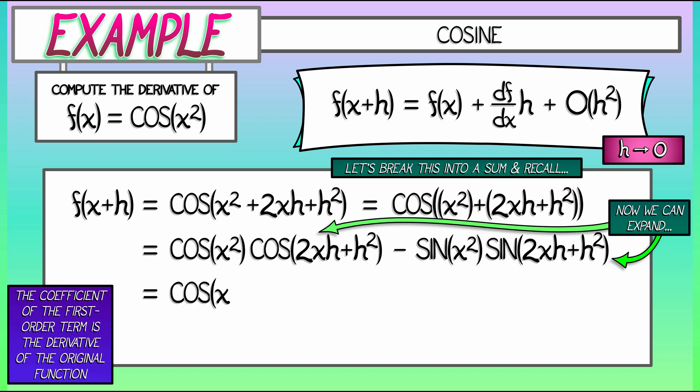This gives us cosine of x squared out front times what's the expansion of cosine of 2xh plus h squared. That's quantity one and then a bunch of other stuff that's in big O of h squared. For the second term, we have minus sine of x squared times what happens when we expand sine of 2xh plus h squared. We get quantity 2xh plus h squared and then a bunch of other stuff. I can put all of that stuff into a big O of h squared. So we just get quantity 2xh plus big O of h squared.